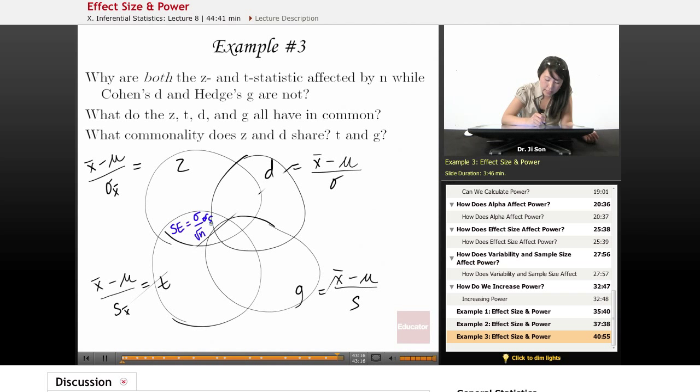or S divided by square root of N, right? And it's this dividing by square root of N that makes these two so affected by N, right? And so it's really because they are distances in terms of standard error.